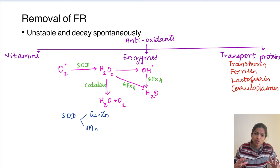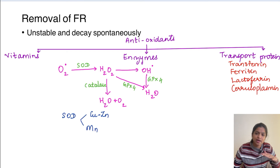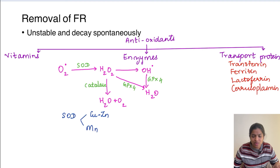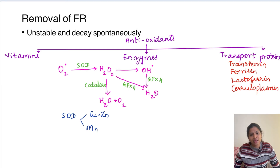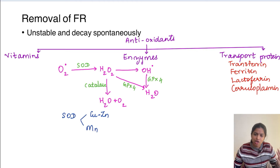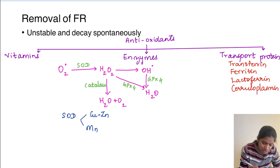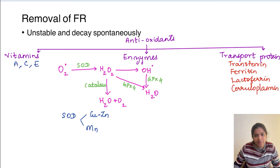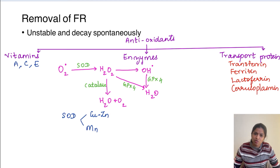Since free radicals are normally produced in the body, how is there no damage in normal cells? There are counteractive mechanisms called antioxidants that remove these free radicals. Free radicals are normally very unstable and decay spontaneously. When they accumulate, antioxidant mechanisms intervene. The first antioxidants are vitamins - vitamins A, C, and E are known antioxidants which can remove free radicals.